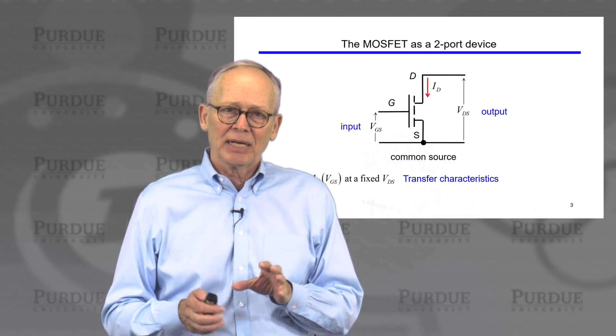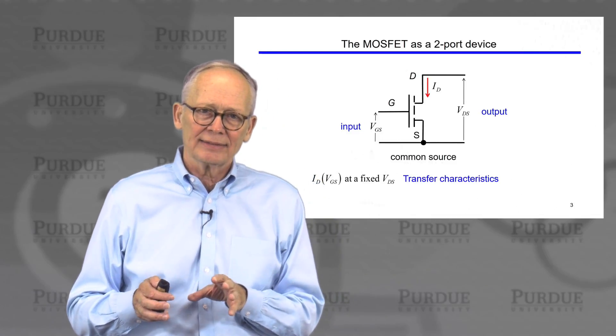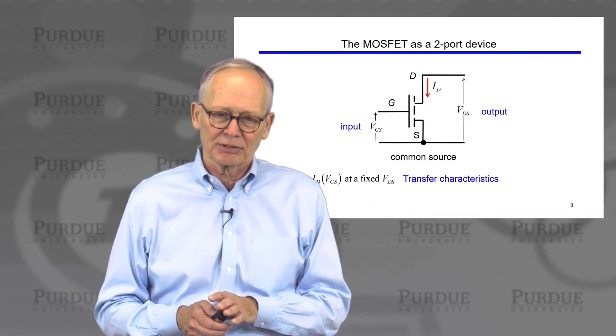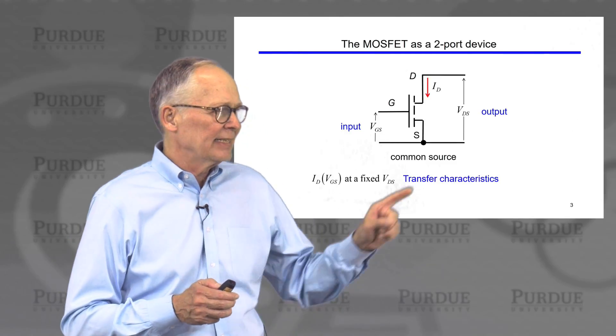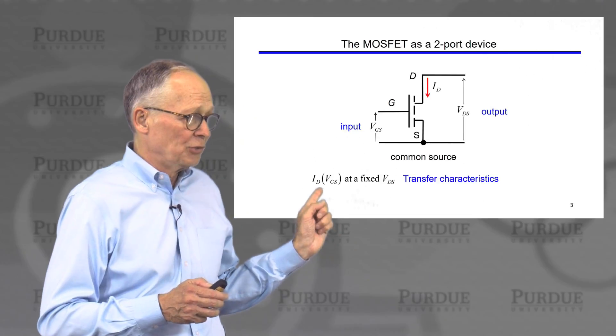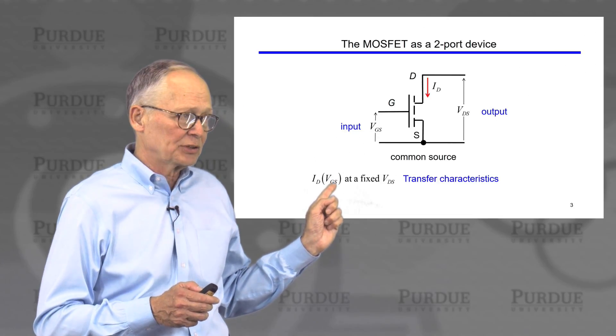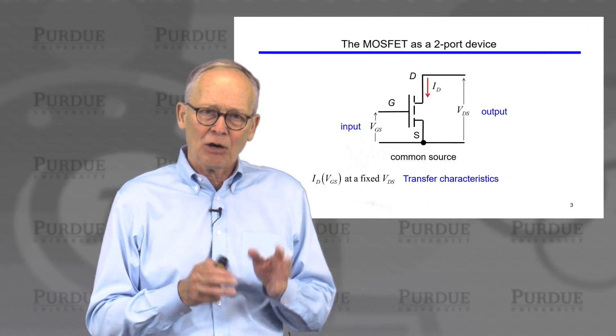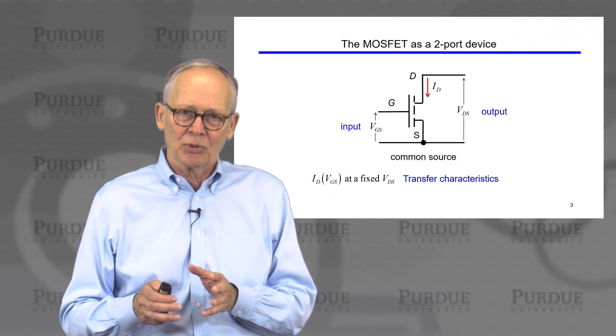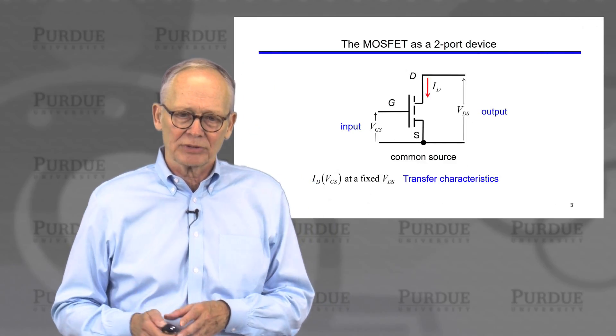And we talked about two different ways that we can plot the IV characteristics. We can plot transfer characteristics. A transfer characteristic is a plot of the drain current versus gate to source voltage at a fixed drain to source voltage. So we're plotting output current versus input voltage at a fixed output voltage.